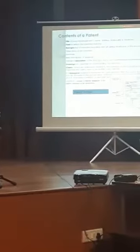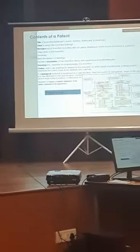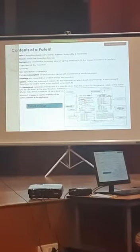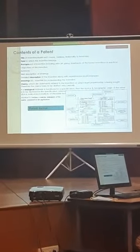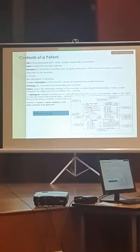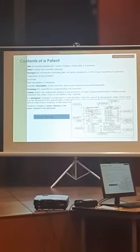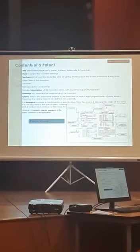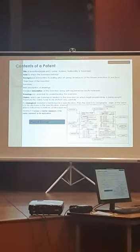This is the content of a patent for those who are new to patents and seeing one for the first time. This is a USPTO patent. The sections include: title, field of invention, background of invention, objective of invention, and summary.